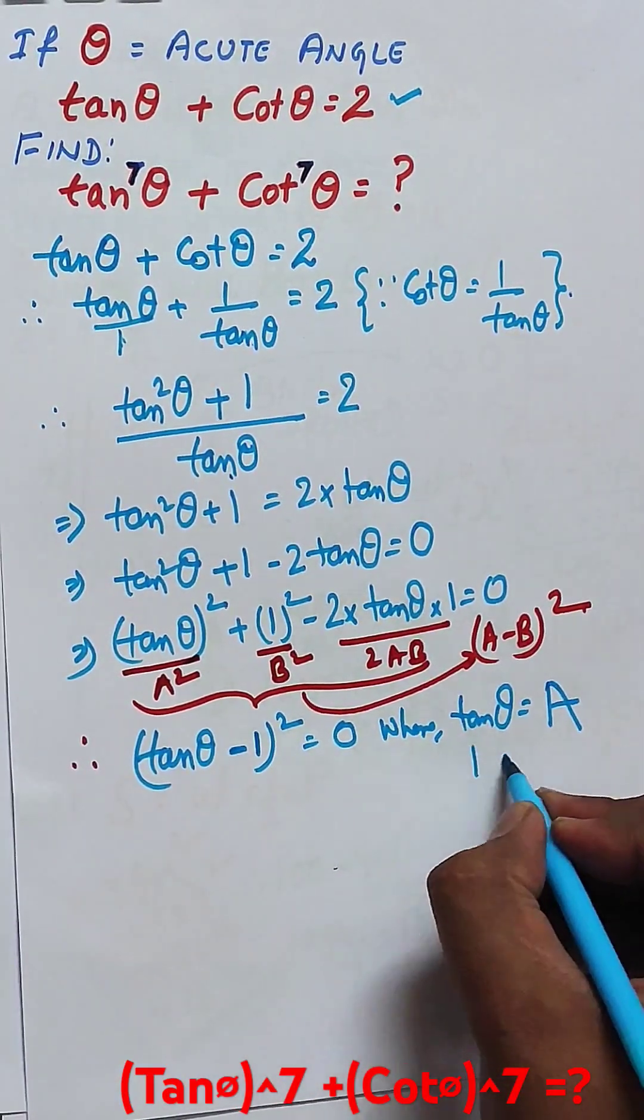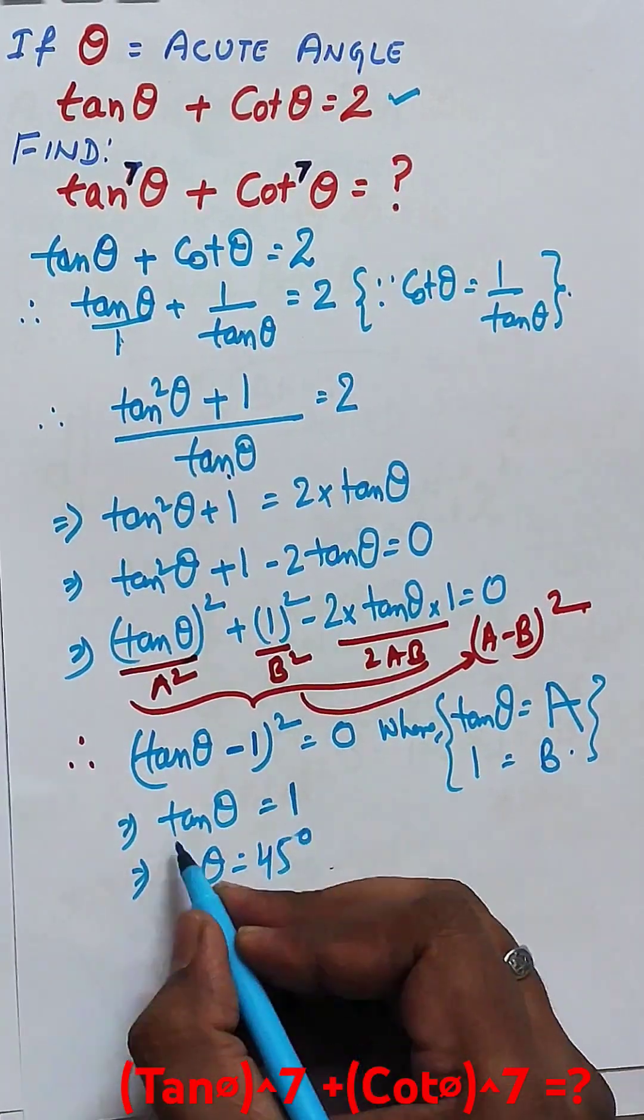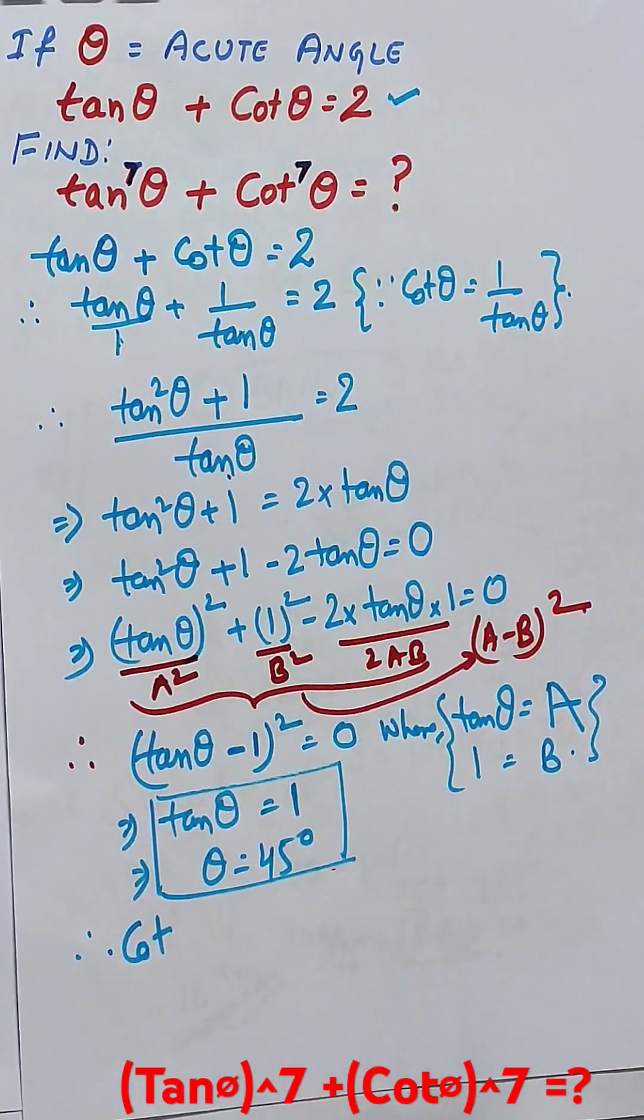This can be written as (tan theta minus 1) whole squared equals 0. So tan theta equals 1, which is the value for theta equals 45 degrees.